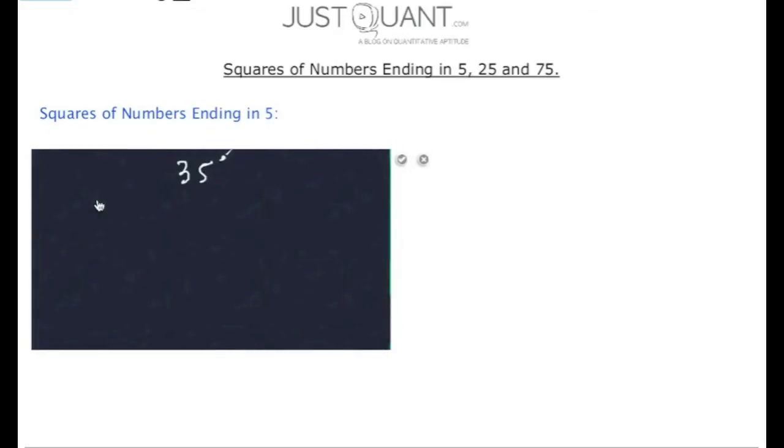Consider 35 square. This square can be thought to consider two parts. The right part will always be 25, and the left part will be the number preceding 5, multiplied by a number which is 1 more than itself, that is, 3 times 3 plus 1, which is 3 times 4, or 12. Hence, the solution is 1225.